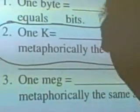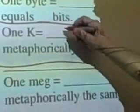1k is 1,000 bytes. K stands for kilobyte. Kilobyte is 1,000. Check this out.